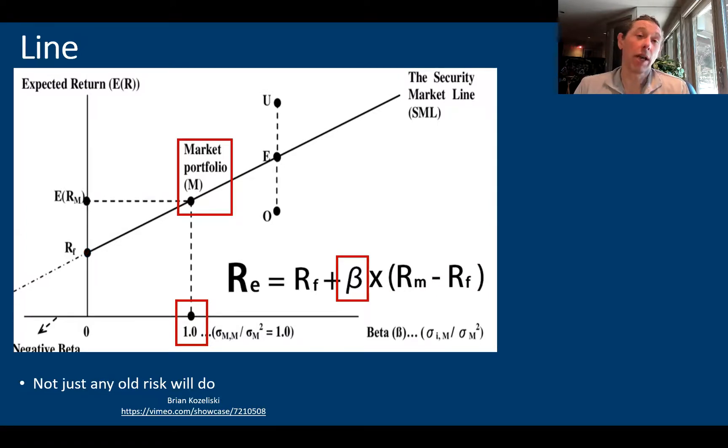Now, by definition, the market portfolio has a beta of one. We can see that here. So here's the two points on the line that are important, the risk-free rate intercept and the market portfolio there.